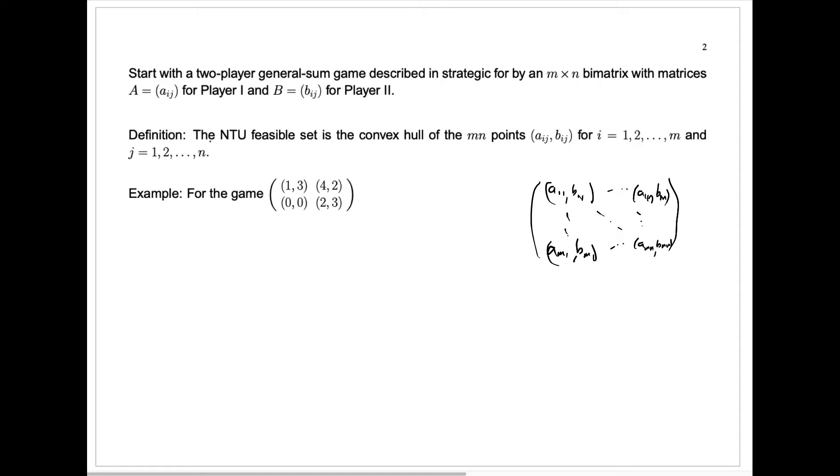So, when we talk about the NTU, the non-transferable utility feasible set, that would certainly include all of the individual payouts. For example, in this game 1-3, it will include the possibility that player 1 gets 1 and player 2 gets 3. It will include the 0-0, it will include the 4-2, it will include the 3-2, but it will also include the entire convex hull of these points.